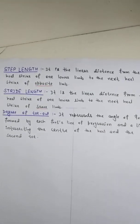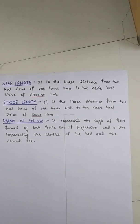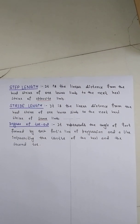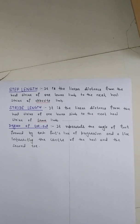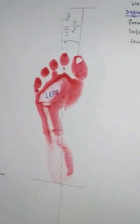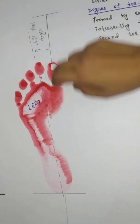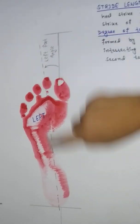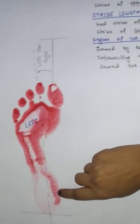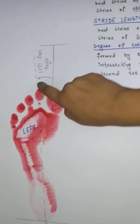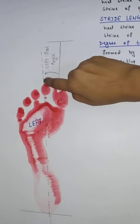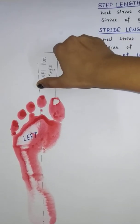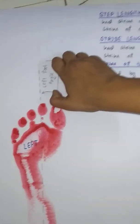The degree of toe out represents the angle of the foot formed by each foot's line of progression and a line intersecting the center of the heel and the second toe. In this footprint, this is the line of progression, this is the line intersecting the center of the heel, and the center of the heel intersects the second toe, forming the degree of toe out angle.